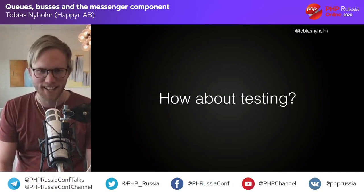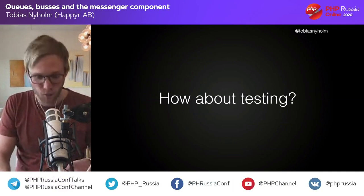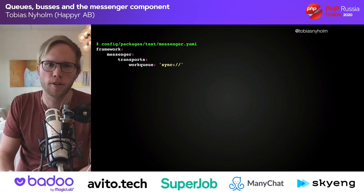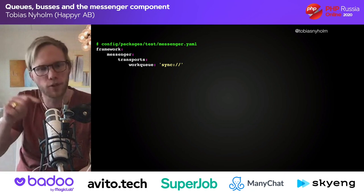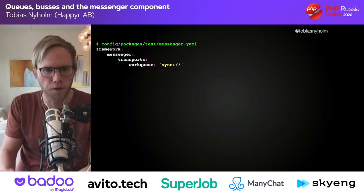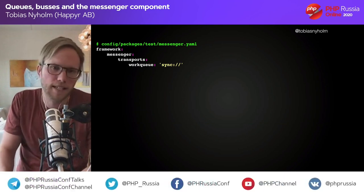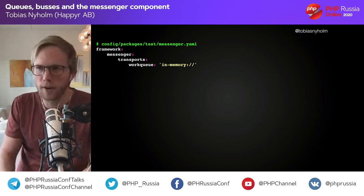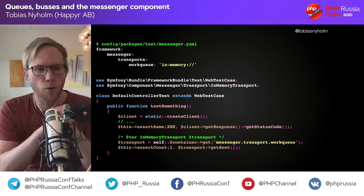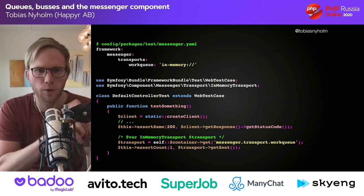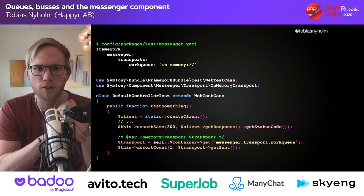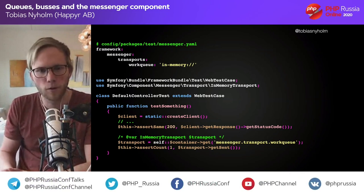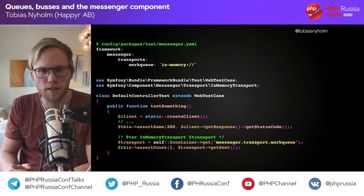For testing: if you're smart or lazy, you can configure your transports as a synchronous transport — no RabbitMQ involved, everything handled synchronously. This works. If you take testing more seriously, you may want to use the in-memory transport, which allows you to test your controllers by making a request, asserting the correct response, and then getting your in-memory transport to see what messages were put on the bus and verify they are in the correct format.